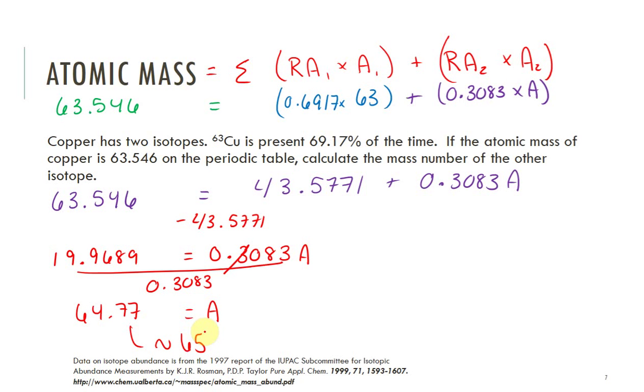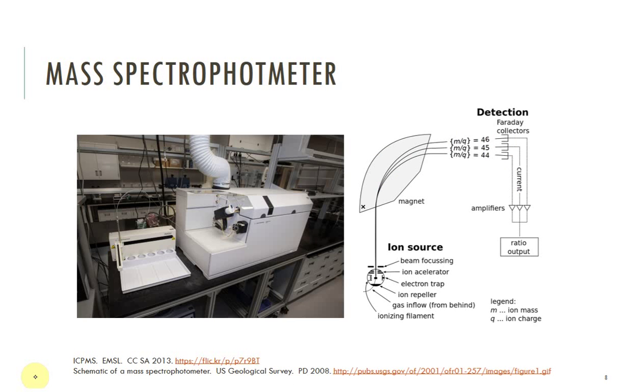Mass number is supposed to be a whole number, so this should really probably round to about 65. Now, in your quizzes, though, guys, it's going to specify. Does it want you to answer as a whole number? Does it want you to answer to two decimal places? Just make sure you're reading your directions. This, to me, is probably the hardest part of this unit. The math is not always pretty, but it is important.